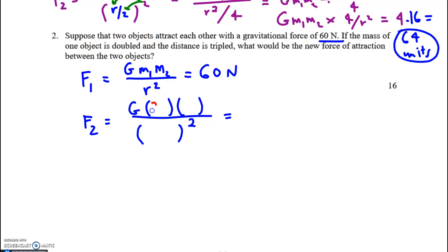In the second case one mass is doubled so this goes to two of the original value. The other they don't say anything so it stays the same. And the distance is tripled from R to 3R. Well before I do anything else I have to distribute the square operation. Now I have G times 2 times M1 times M2 over 3 squared, that's 9 R squared.